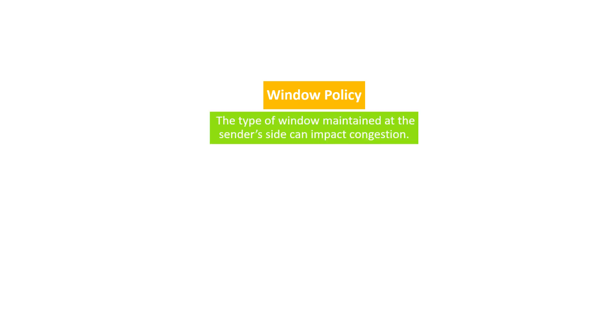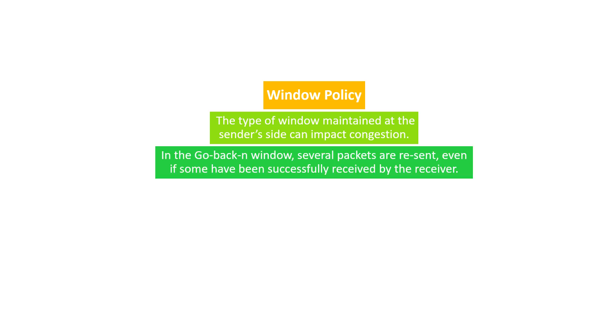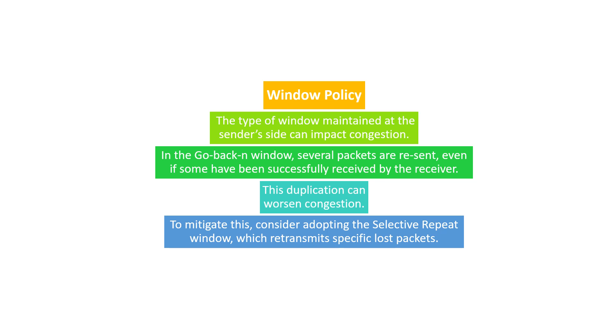The next policy is the window policy. The type of window maintained at the sender side can also impact congestion. In the go-back-N window, several packets are resent even if some have been successfully received by the receiver — this duplication can worsen congestion. To reduce this, it is better to adopt the selective repeat window, which retransmits only specific lost packets rather than all packets.